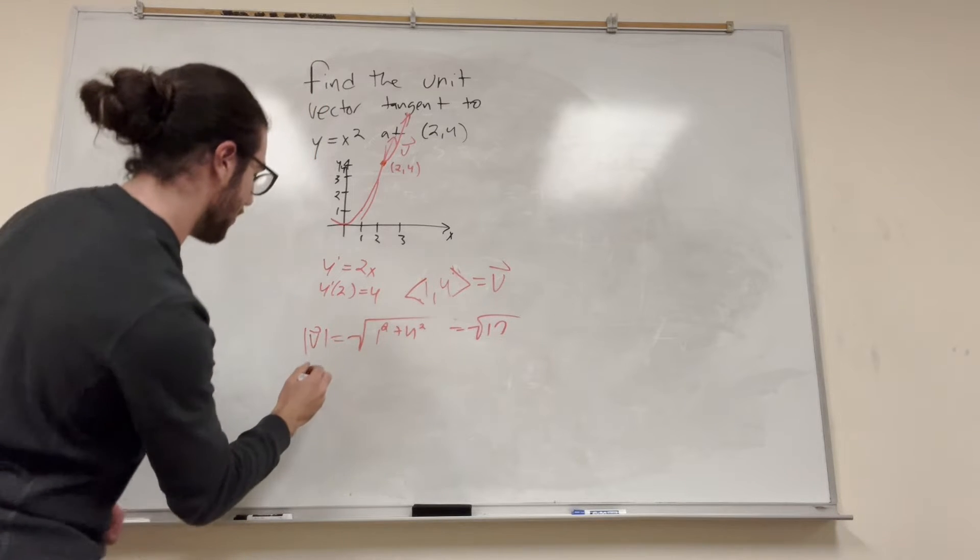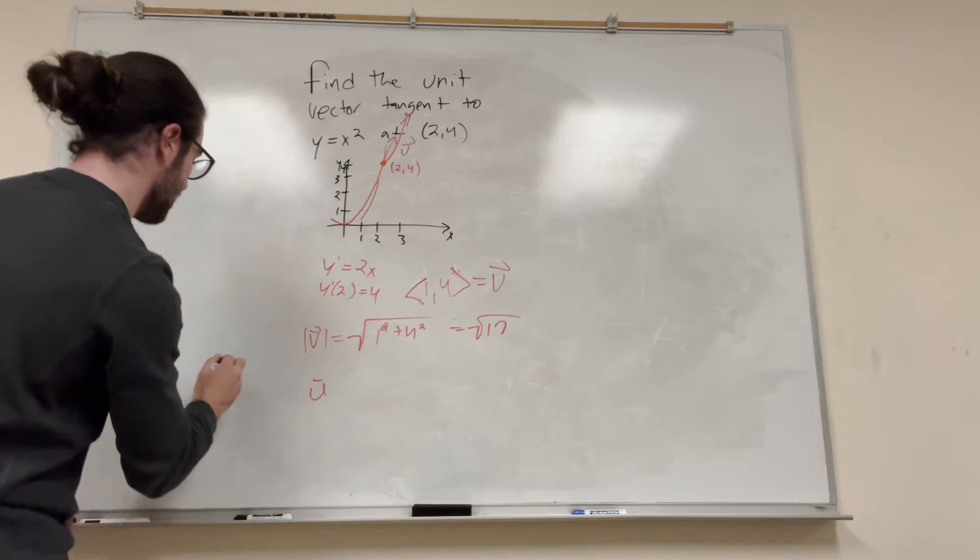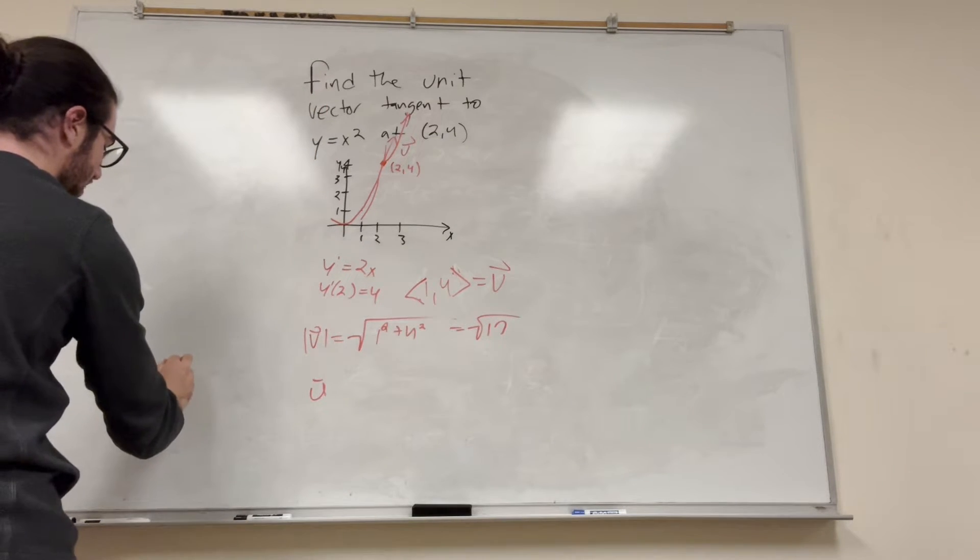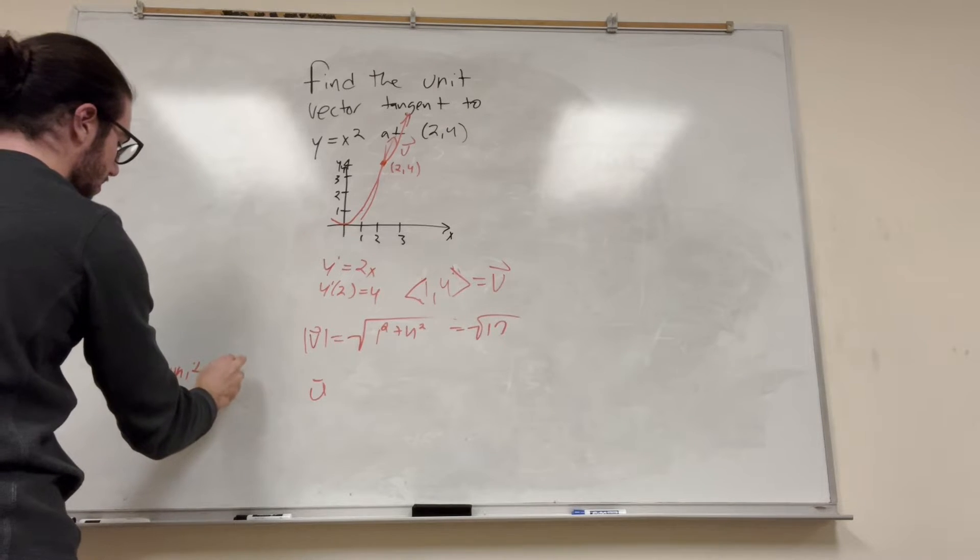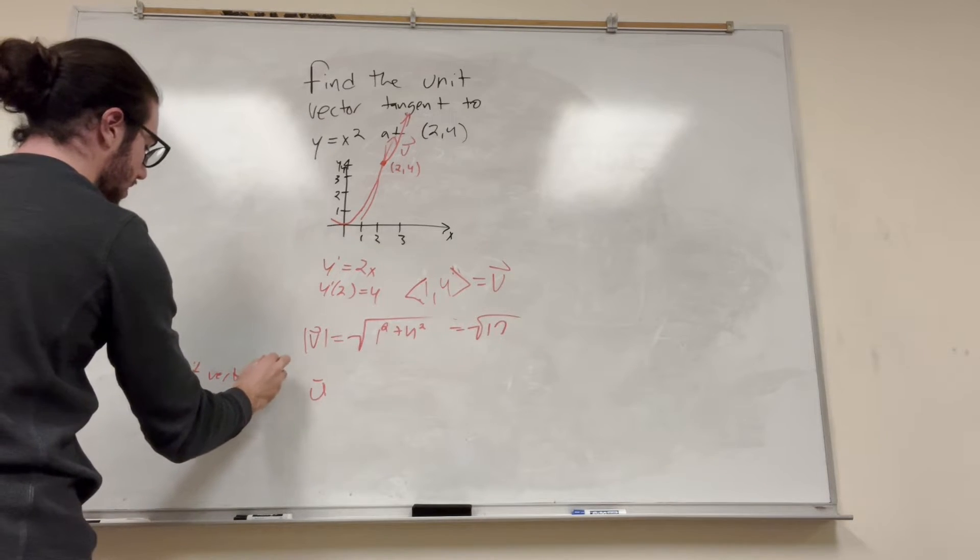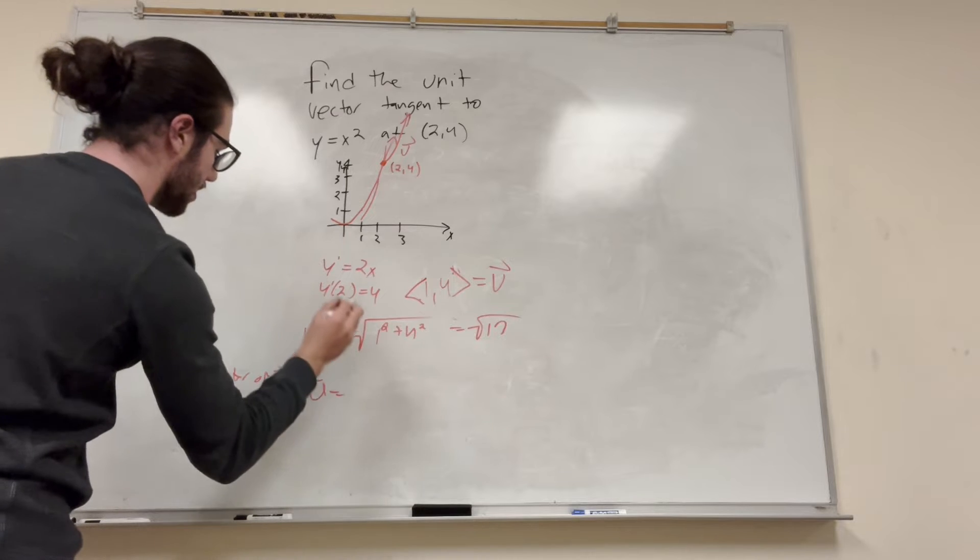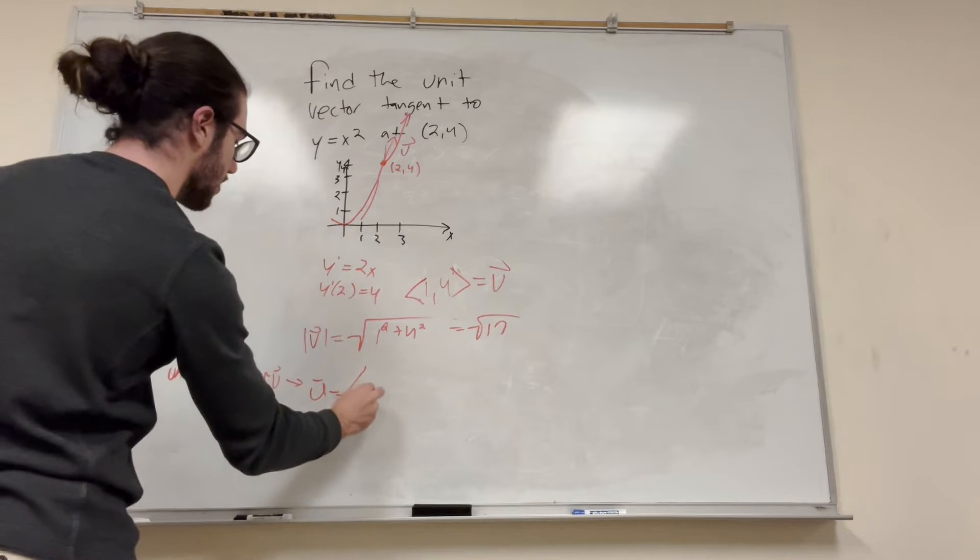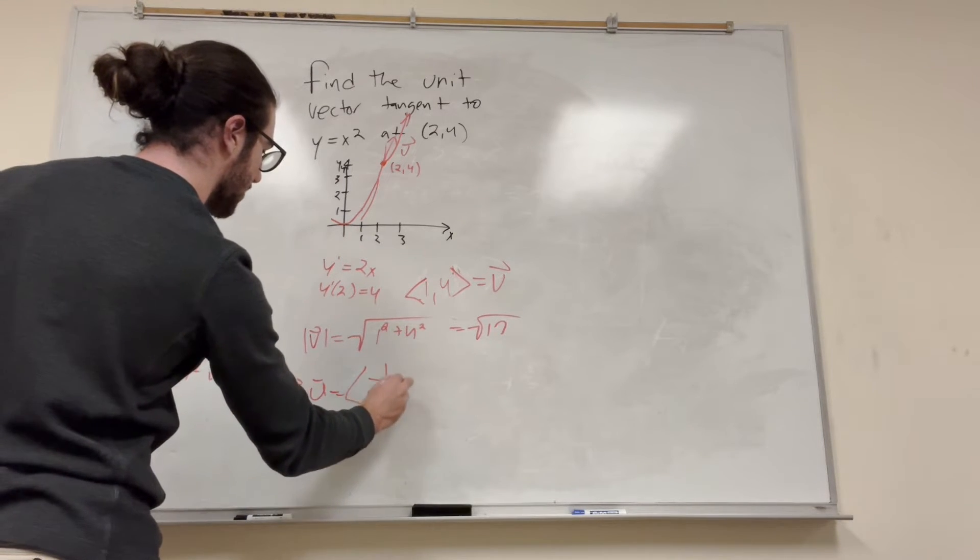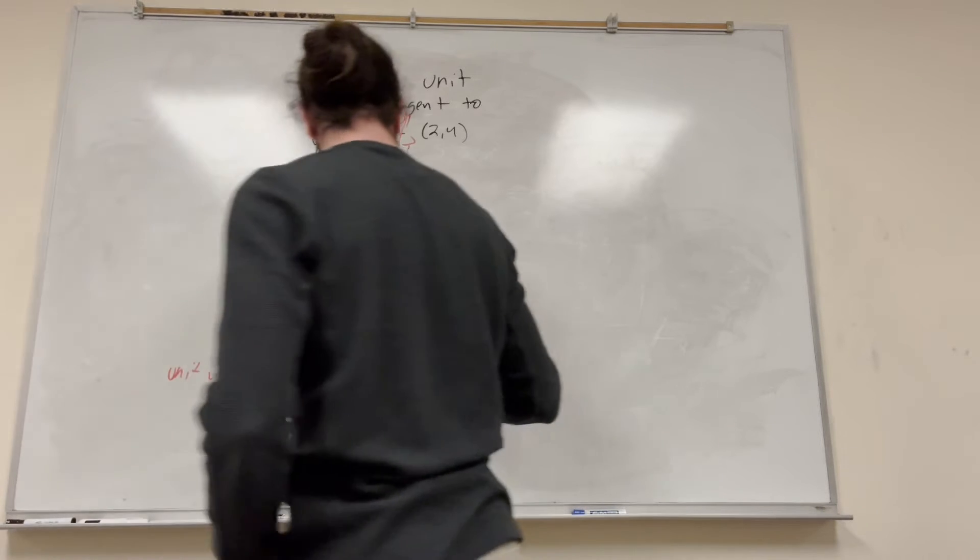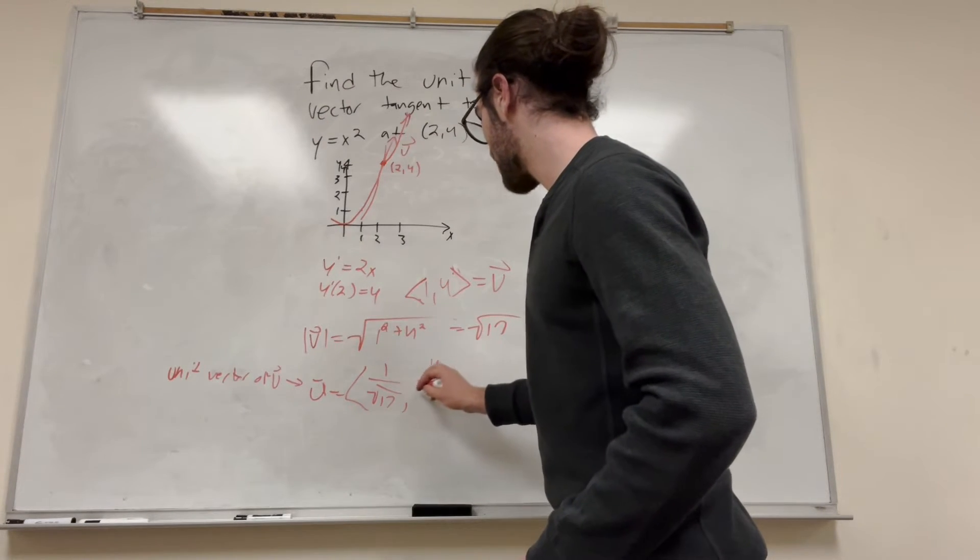So now if we want to find our unit vector, this is the unit vector of V is equal to 1 over the square root of 17, 4 over the square root of 17.